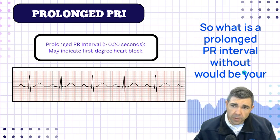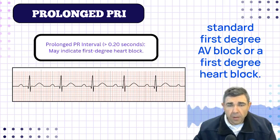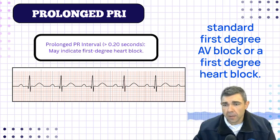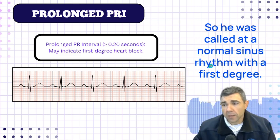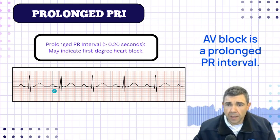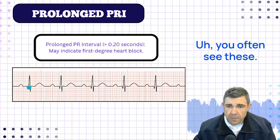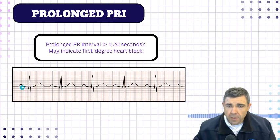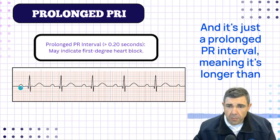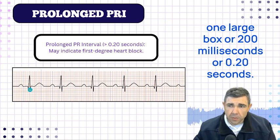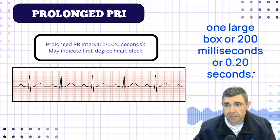A prolonged PR interval is your standard first degree AV block, or first degree heart block. You would call that a normal sinus rhythm with a first degree AV block. It's very common, and it's simply a prolonged PR interval — meaning it's longer than one large box, or 200 milliseconds, or 0.20 seconds.